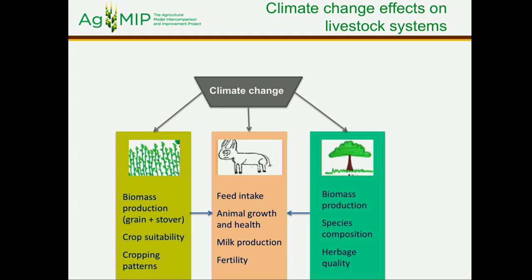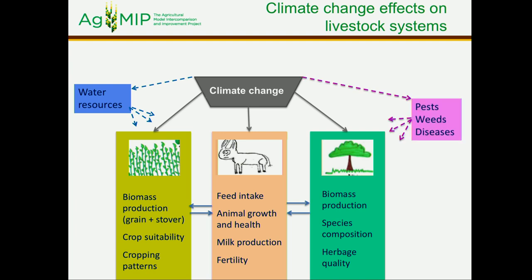All that will have its impact on feed intake, on growth, on milk production, etc. There are also a few other important elements indicated here with dashed arrows, because these are elements we have not yet taken into account in our models — impacts on water resources, impacts of pests and diseases, etc.